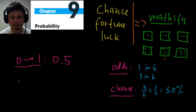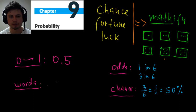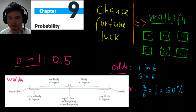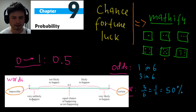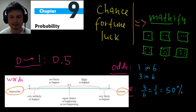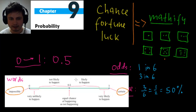Finally, you can also express probability in words. For example, if the probability is 0 it's essentially impossible; if it's 1, it is certain. In between you have: very unlikely to happen, not likely to happen, equal chance, likely to happen, and very likely to happen.